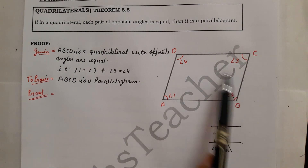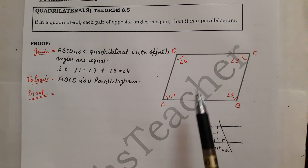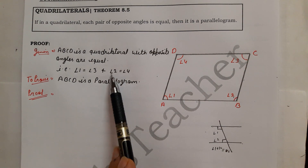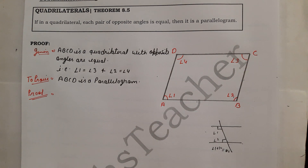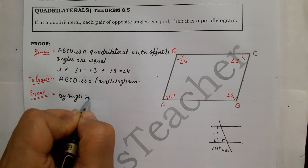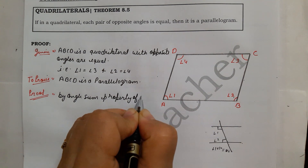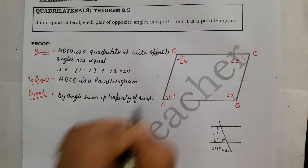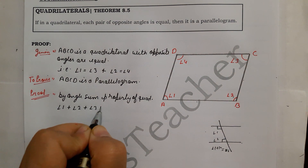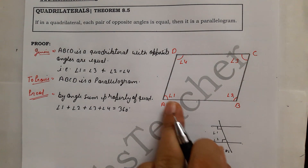We know a quadrilateral has 4 angles and by the angle sum property of a quadrilateral the sum of all four angles equals 360 degrees. So Angle 1 plus Angle 2 plus Angle 3 plus Angle 4 equals 360 degrees. This is our starting equation — Equation 1 — by the angle sum property of a quadrilateral, similar to the triangle angle sum property.